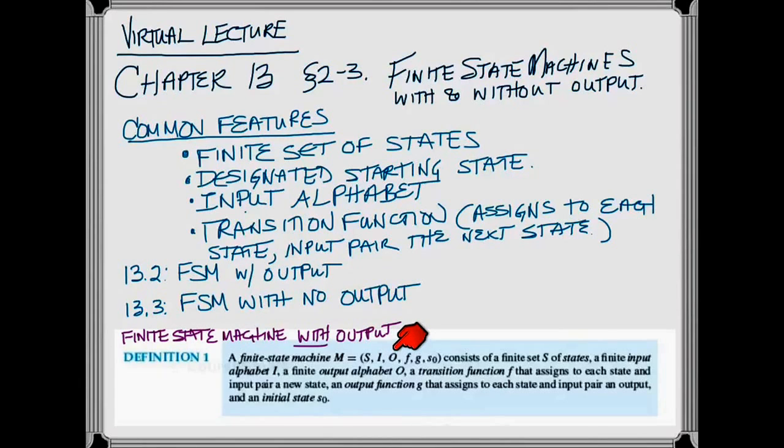F, which is the transition function, which tells us how the states are related based on inputs, G, which is the output function that assigns to each state input pair a particular output, and then S0, which is our designated initial state.